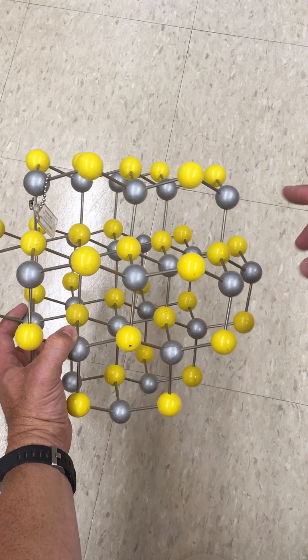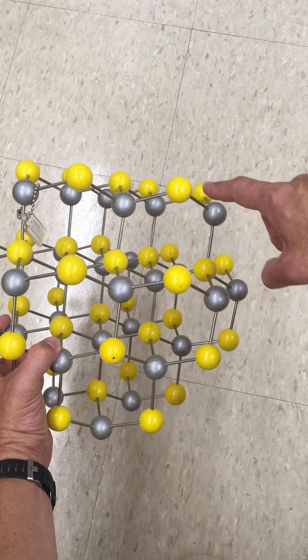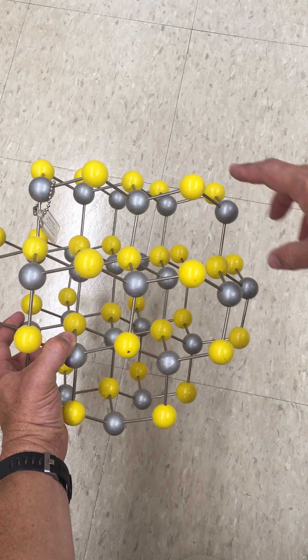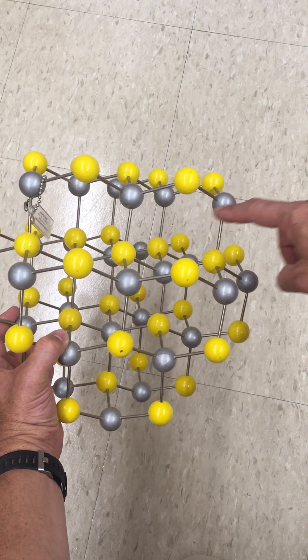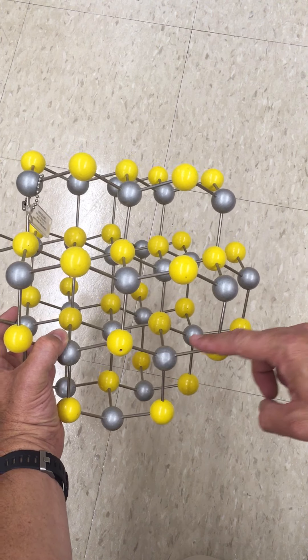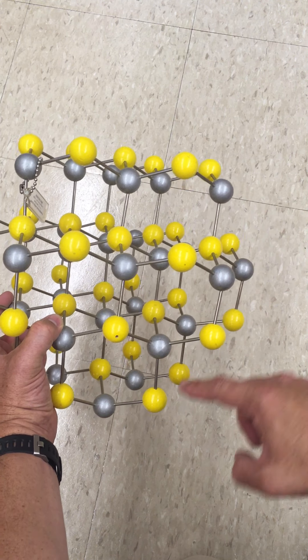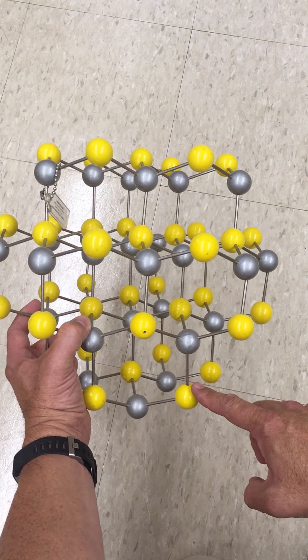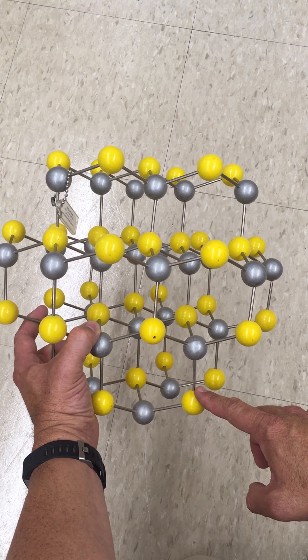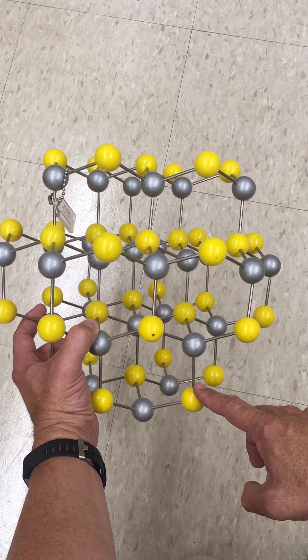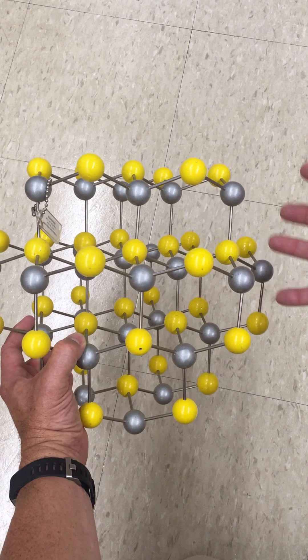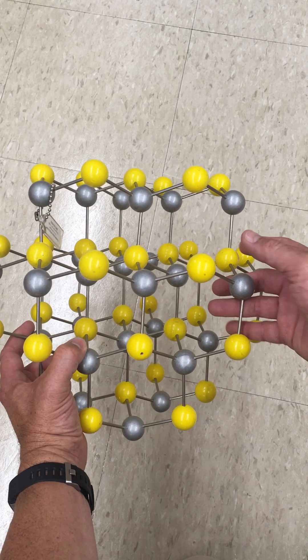But what we also have here is, with respect to the sulfide layers, we have an A layer, a B layer, and a C layer, and then back to an A layer, much like we would see with cubic close-pack structures. In fact, this structure is considered to be cubic close-pack with respect to the sulfide ions.